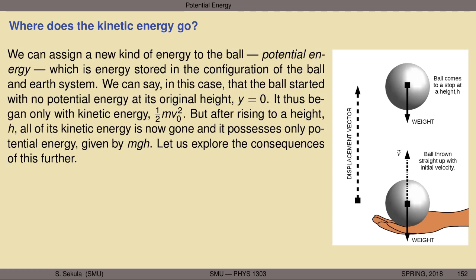We can assign a new kind of energy to the ball: potential energy — energy stored in the configuration of the ball-earth system. In this specific case, where the ball is thrown up and comes to its highest point with no velocity, the ball started with no potential energy at y equals zero and only kinetic energy, one-half m v₀ squared. After rising to maximum height h, all its kinetic energy is gone and it possesses only potential energy, mgh.